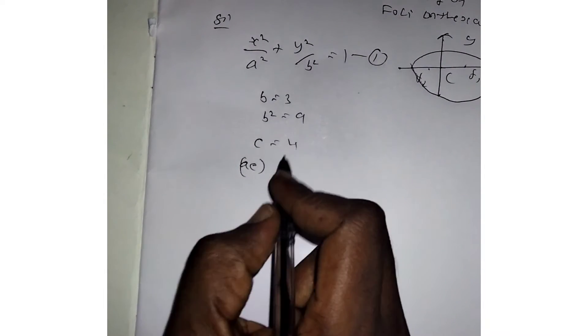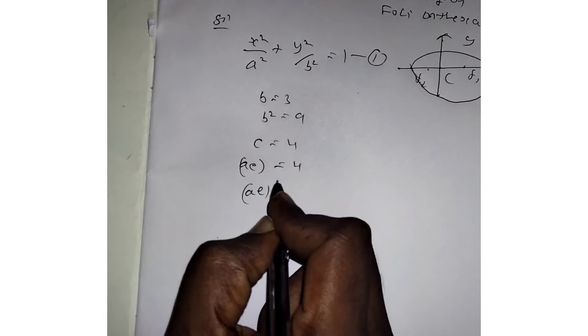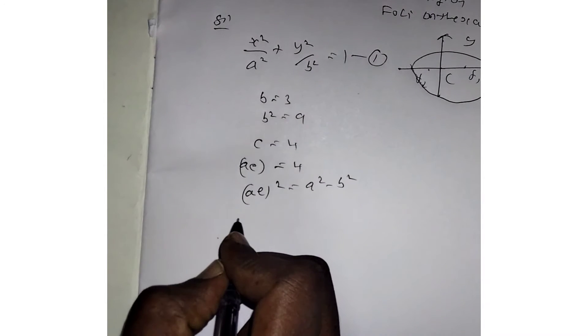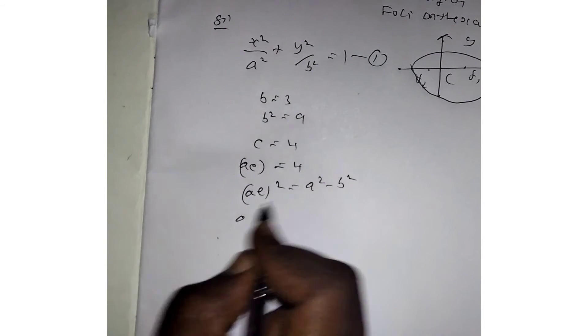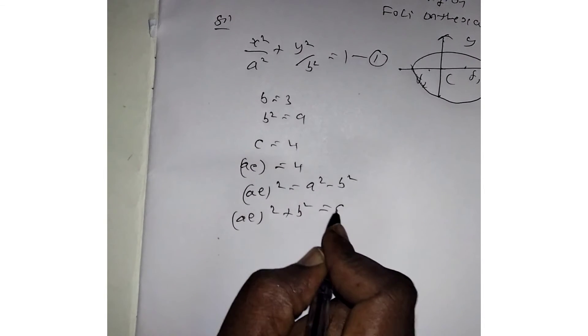So c equals ae equals 4. With the ae term, we have the formula: (ae)² equals a² minus b². To find a², we rearrange this as a² equals (ae)² plus b².